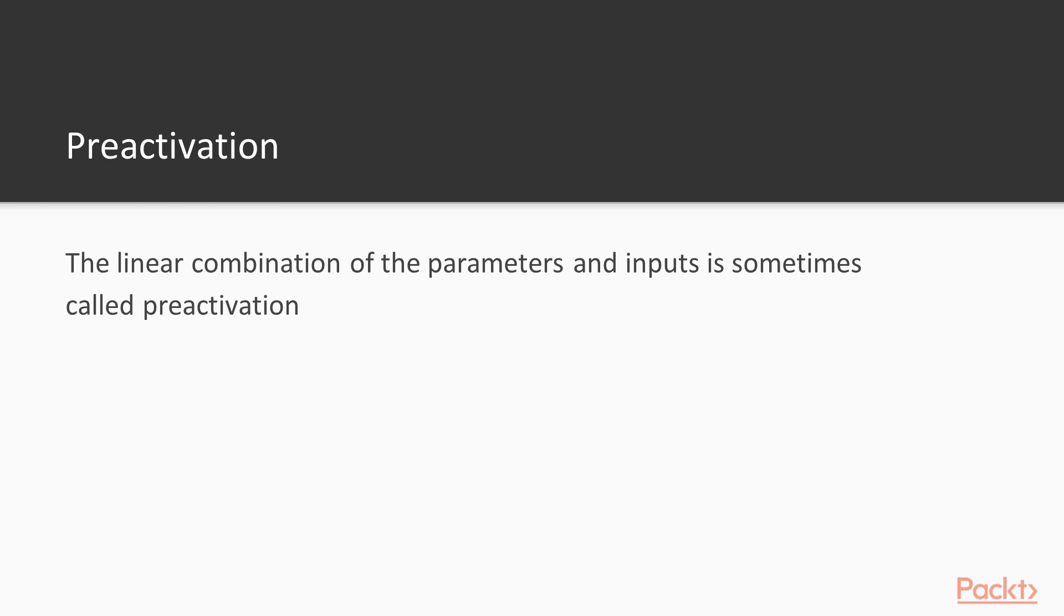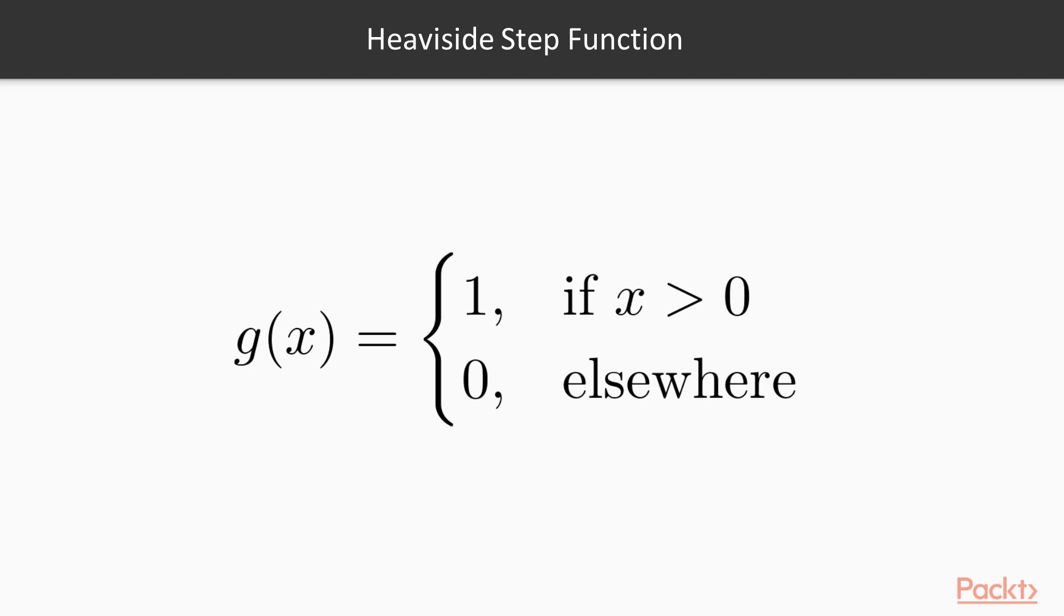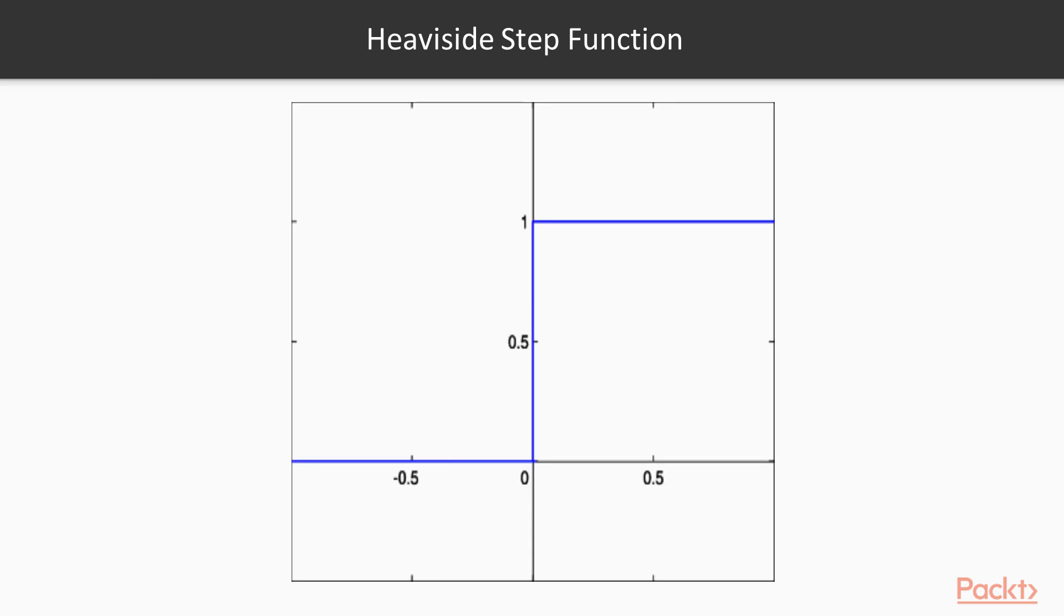Rosenblatt's original perceptron used the heavyside step function, also called the unit step function. The heavyside step function is shown in this equation, where X is the weighted combination of the features. If the weighted sum of the features and the bias term is greater than zero, the activation function returns one and the perceptron predicts that the instance is the positive class. Otherwise, the function returns zero and the perceptron predicts that the instance is the negative class. The heavyside step activation function is plotted in this figure.